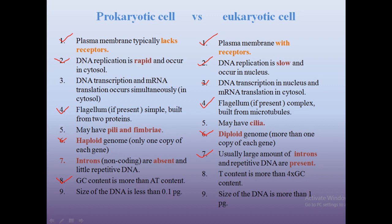In eukaryotic cells, the adenine and thymine content is more than the GC content in the DNA. The size of the DNA is less than 0.1 picogram in prokaryotic cells, and more than 1 picogram in the case of eukaryotic cells.